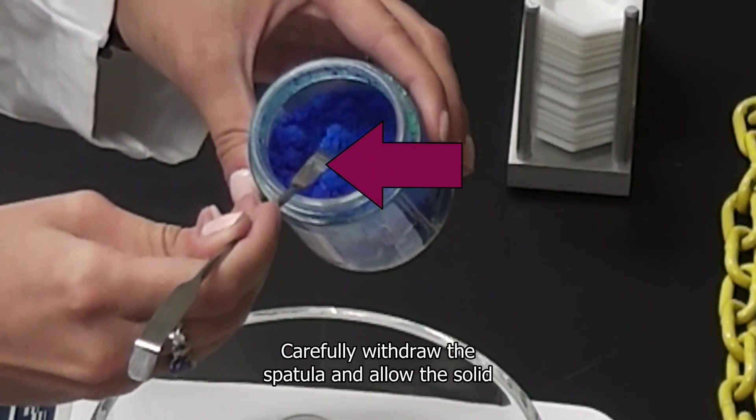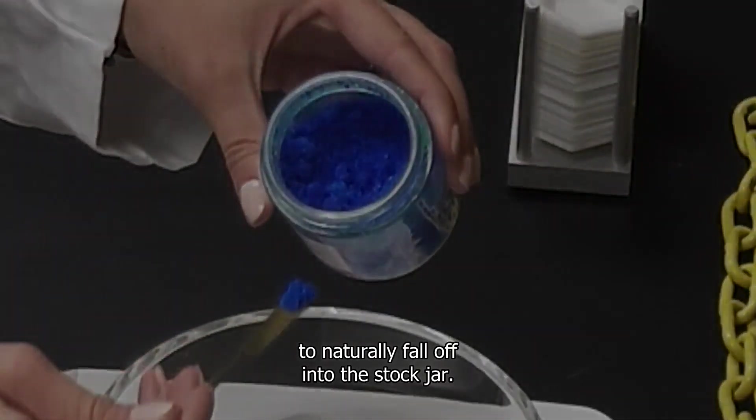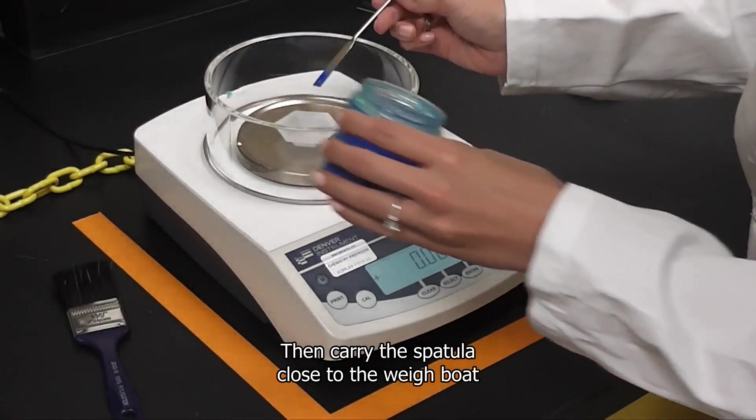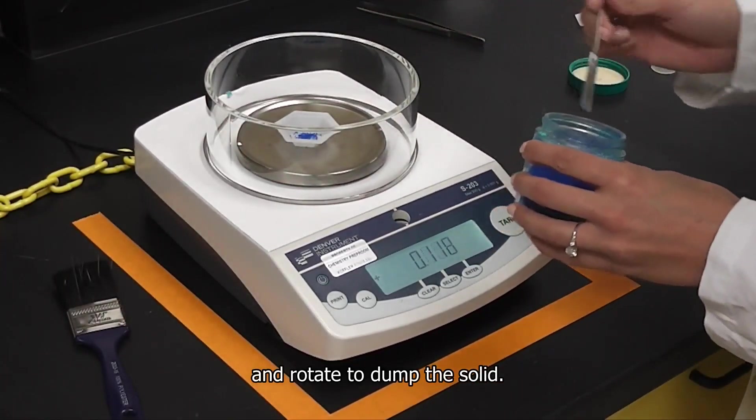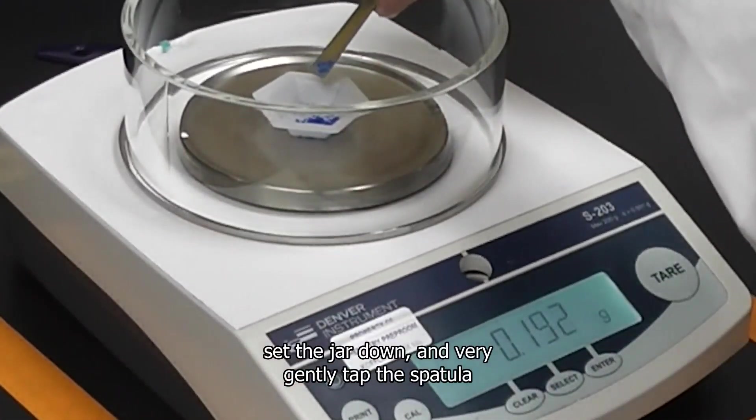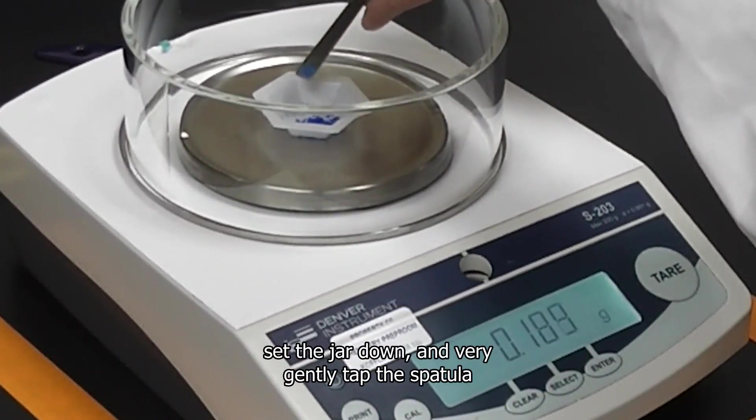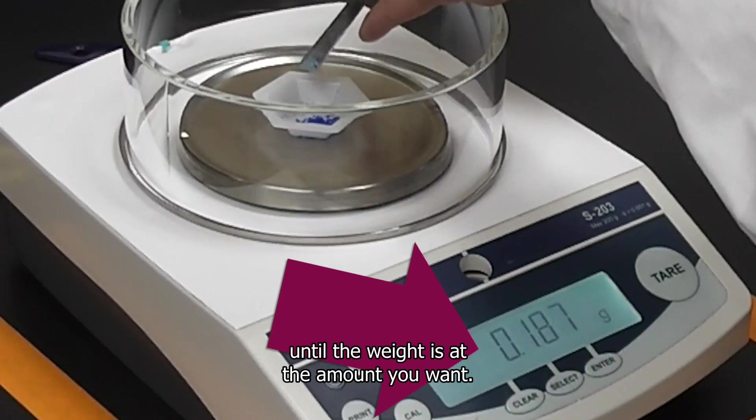Carefully withdraw the spatula and allow the solid to naturally fall off into the stock jar. Then carry the spatula close to the weigh boat and rotate it to dump the solid. When you get close to the weight you are aiming for, set the jar down and very gently tap the spatula until the weight is at the amount you want.